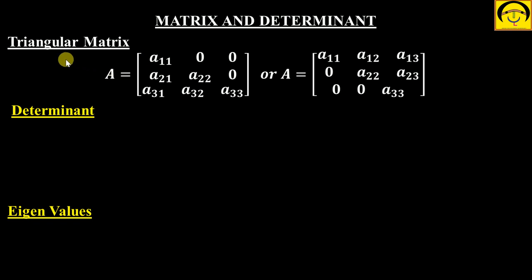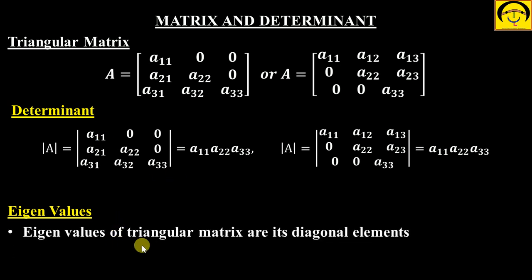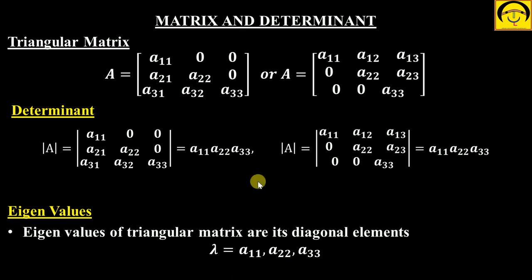For triangular matrices — upper triangular or lower triangular — the determinant equals the product of diagonal elements, and the eigenvalues of a triangular matrix are its diagonal elements A₁₁, A₂₂, A₃₃.